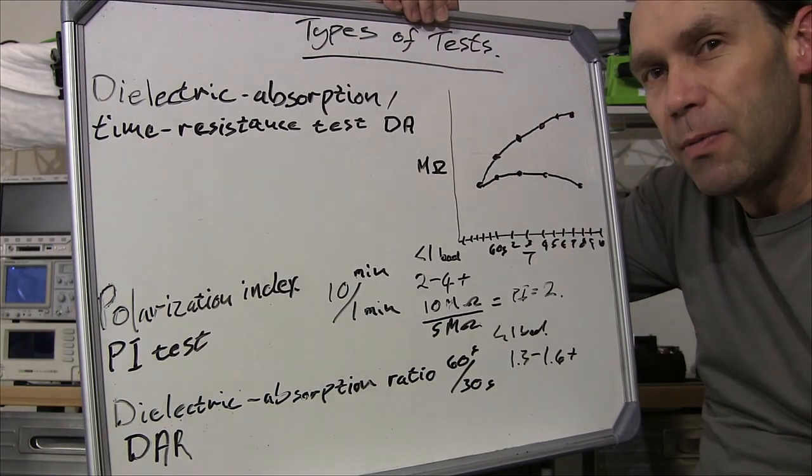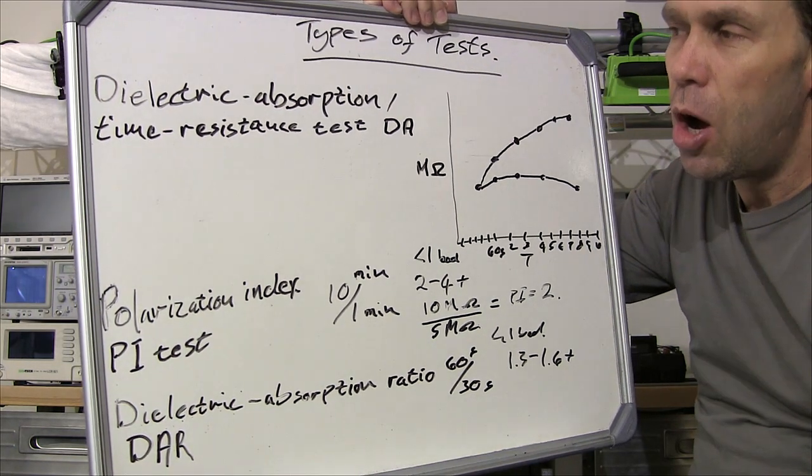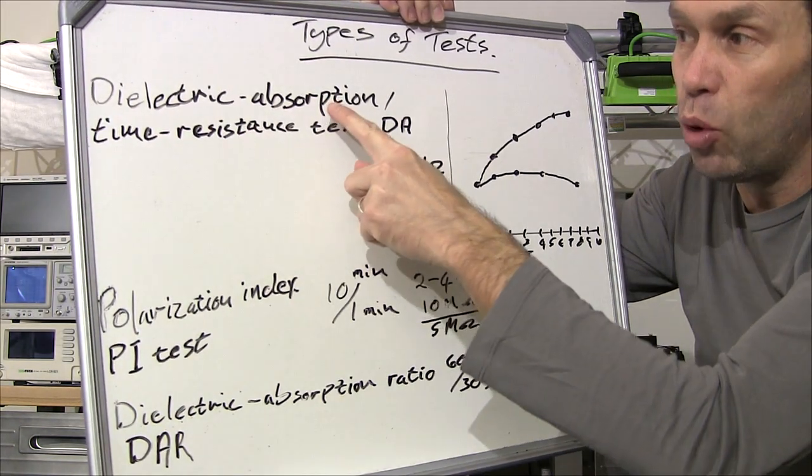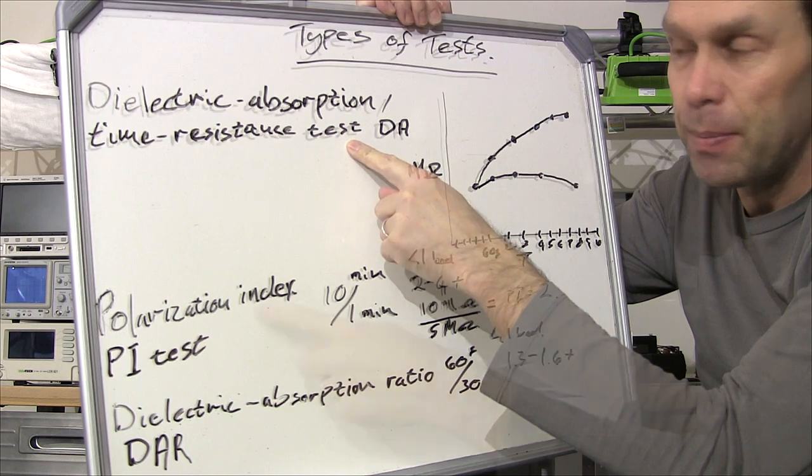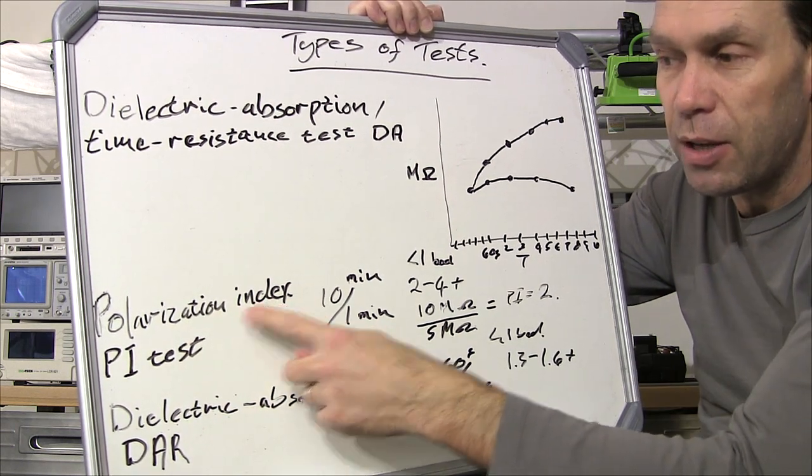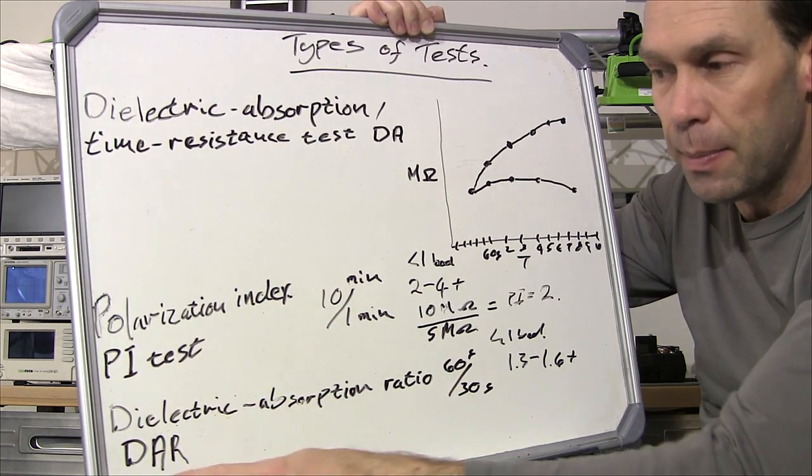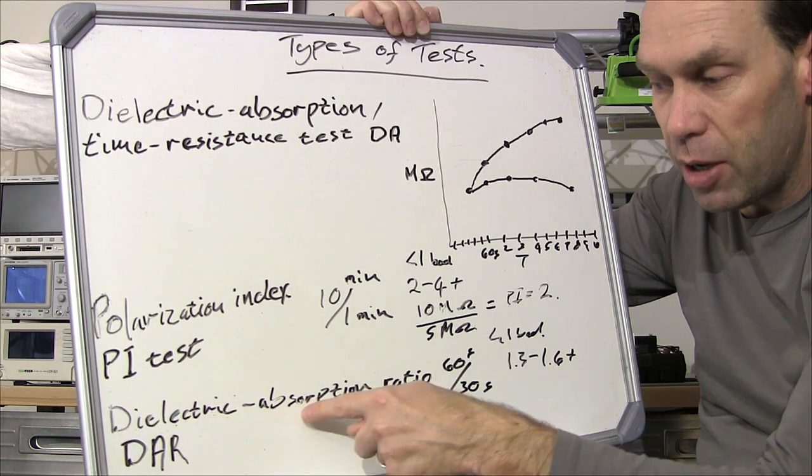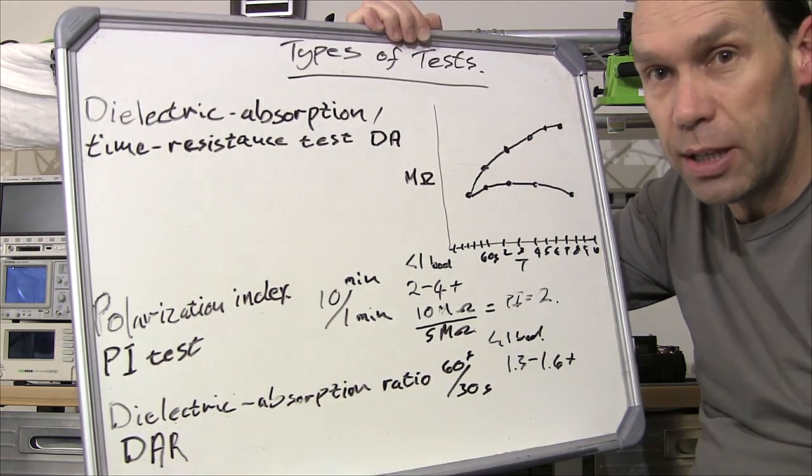Right, the next couple of time related tests are called the dielectric absorption or time resistance test. We've got our polarization index or PI test and then a dielectric absorption ratio or DAR test.